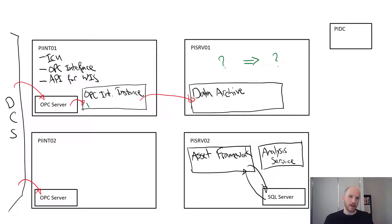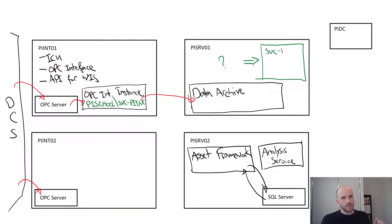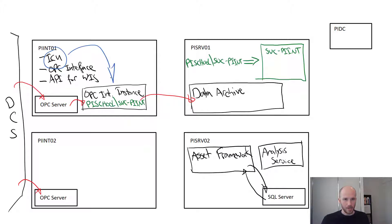We'll configure our interface to run under pyschool\svc-pi-int, which is a group managed service account that's been created for us. We need to come over to the data archive and create our identity, calling it svc-pi-int to match the account name. Then we need to create the mapping to the account. After that, we open the ICU on pi-int-01, create our instance, tell it to connect to our OPC server and data archive, configure it to run under the svc-pi-int account, and run it.